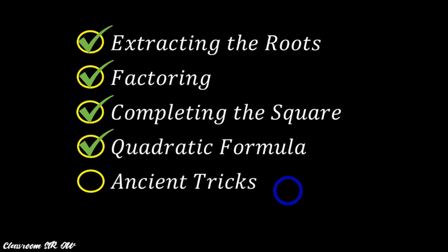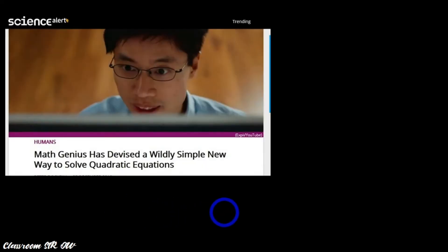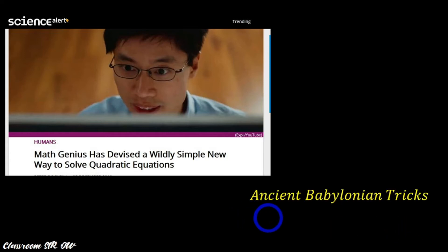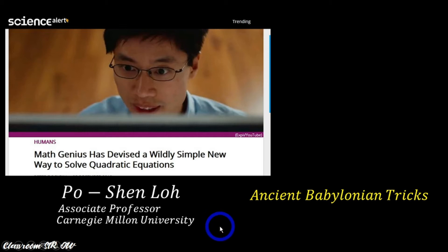In our previous session, we covered four methods for solving the roots of quadratic equations. In this session, we will learn an ancient trick. Allow me to acknowledge a very important person responsible for tracking down this ancient Babylonian trick — no other than Dr. Po Shen Loh, an associate professor at Carnegie Mellon University.